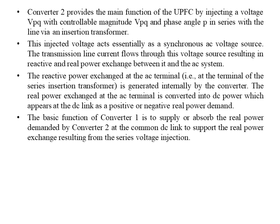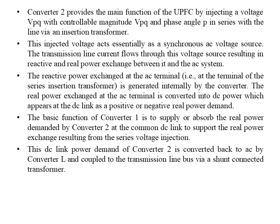The basic function of Converter 1 is to supply or absorb the real power demanded by Converter 2 at the common DC link, to support the real power exchange resulting from the series voltage injection. While Converter 2 injects the voltage into the series transmission line via the injection transformer to meet reactive power demand, its real power decreases. Converter 1 fulfills the required real power demand of Converter 2 via the DC link. This DC link power demand of Converter 2 is converted back to AC by Converter 1 and coupled to the transmission line bus via a shunt-connected transformer.